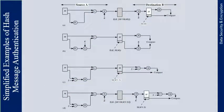This figure shows a variety of ways in which a hash code can be used to provide message authentication. In the first example, the message plus the concatenated hash code is encrypted using symmetric encryption with a key. Because only A and B share the secret key, the message must have come from A and has not been altered. The hash code provides the redundancy required for authentication, and because encryption is applied to the entire message plus hash code, confidentiality is also provided.